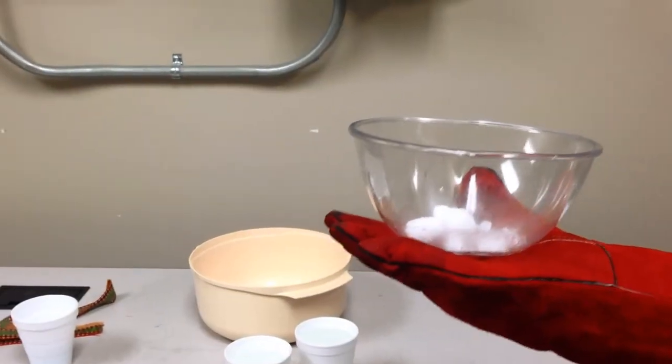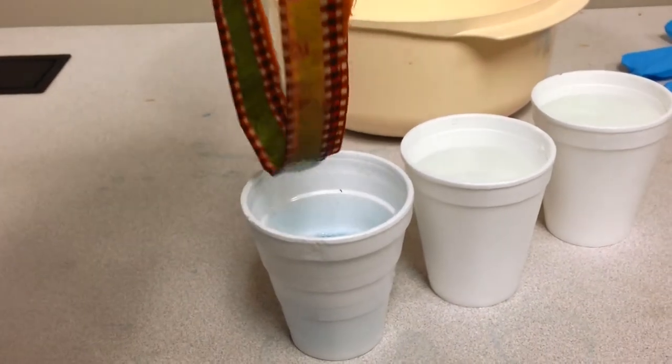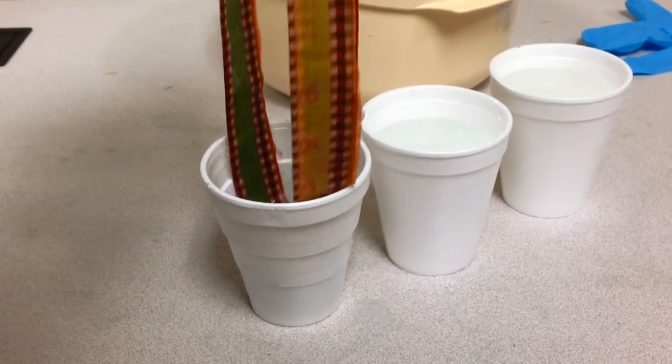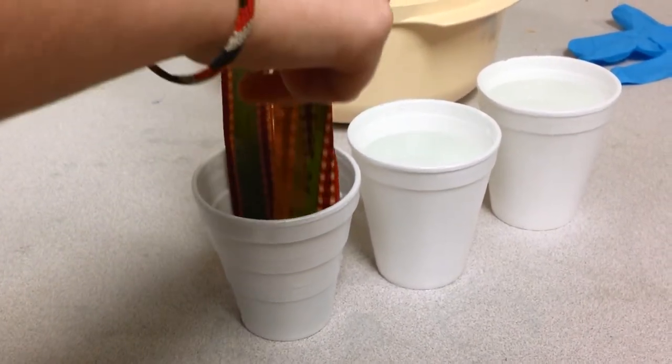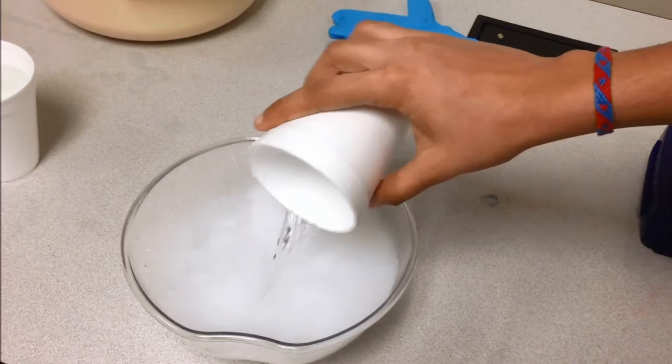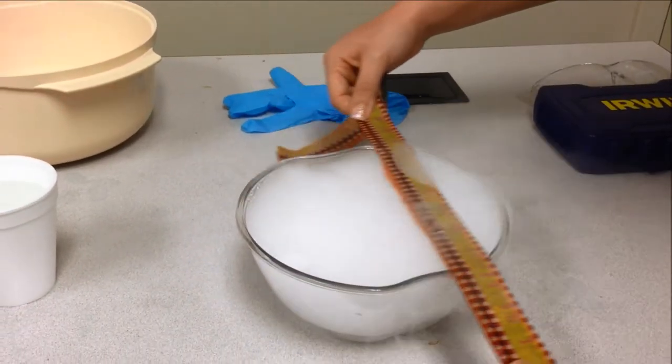You're going to need dry ice and a bowl. After stirring the glycerin and the dish detergent, you're going to need to put your cloth strip into the soap glycerin solution. Get it completely covered, like so. Pour your cup of water into the bowl with the dry ice. Slide your cloth across the bowl.